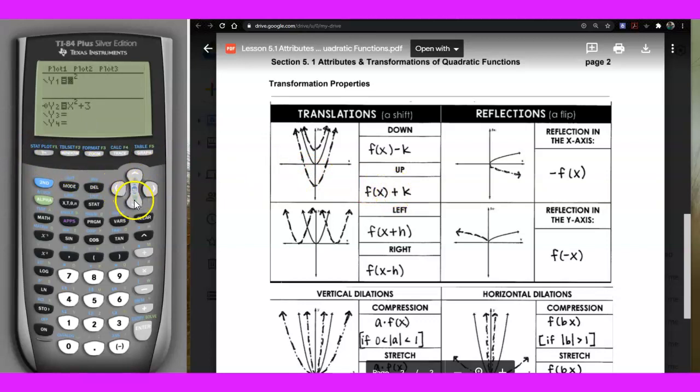So now what I'm going to do is I'm going to add a negative right in front of it and you're going to see what's going to happen. Maybe you can predict what's going to happen. So we have a negative x squared.